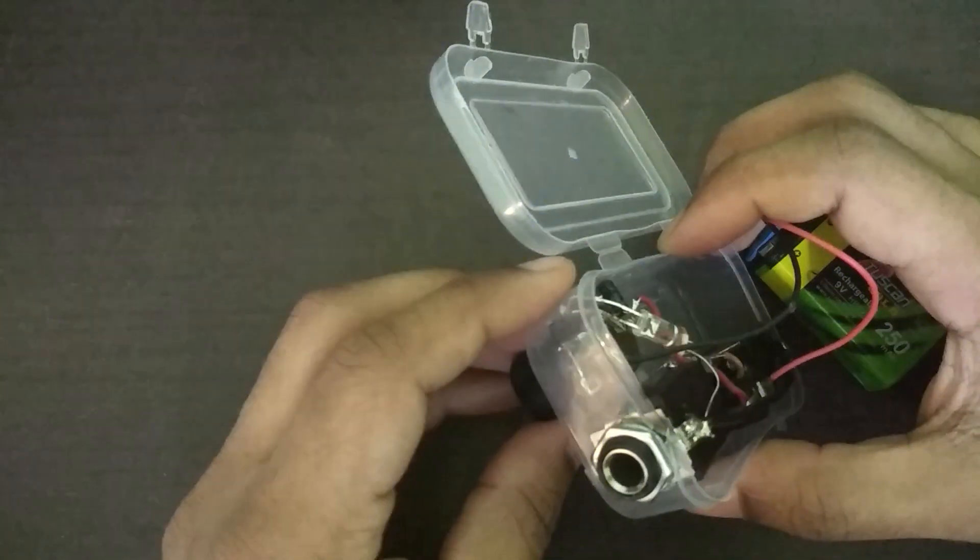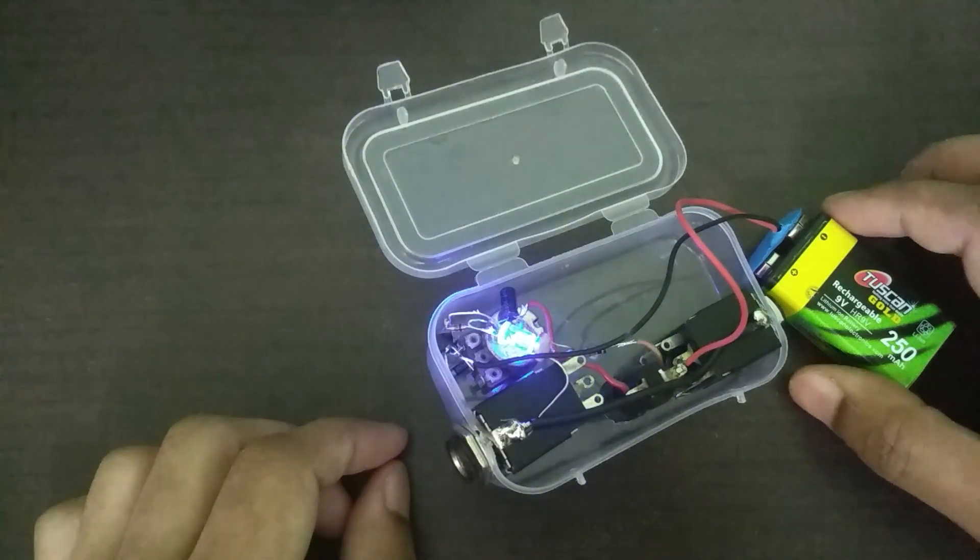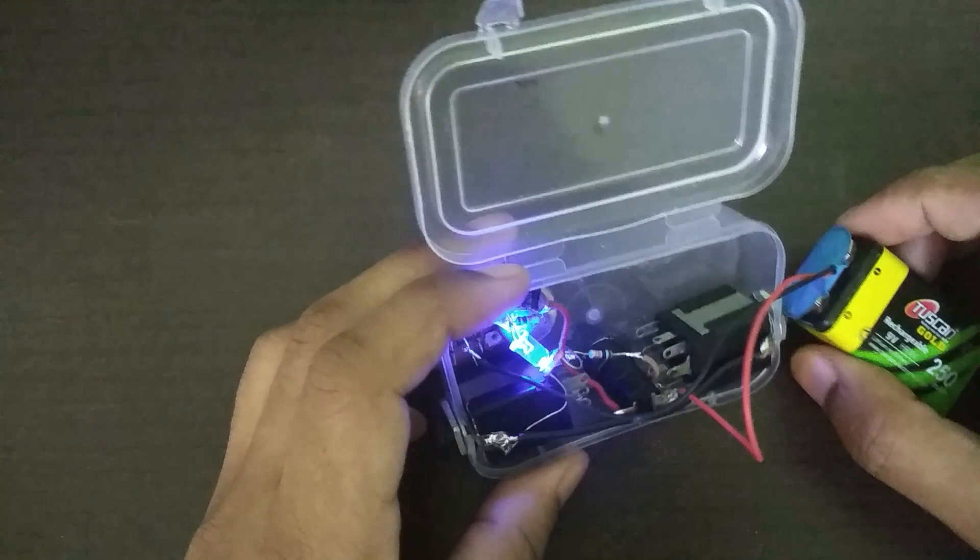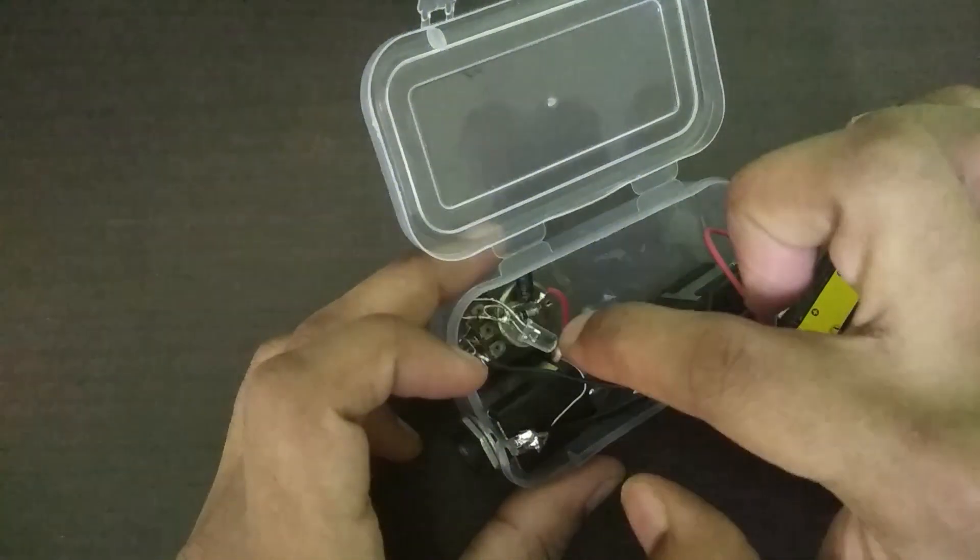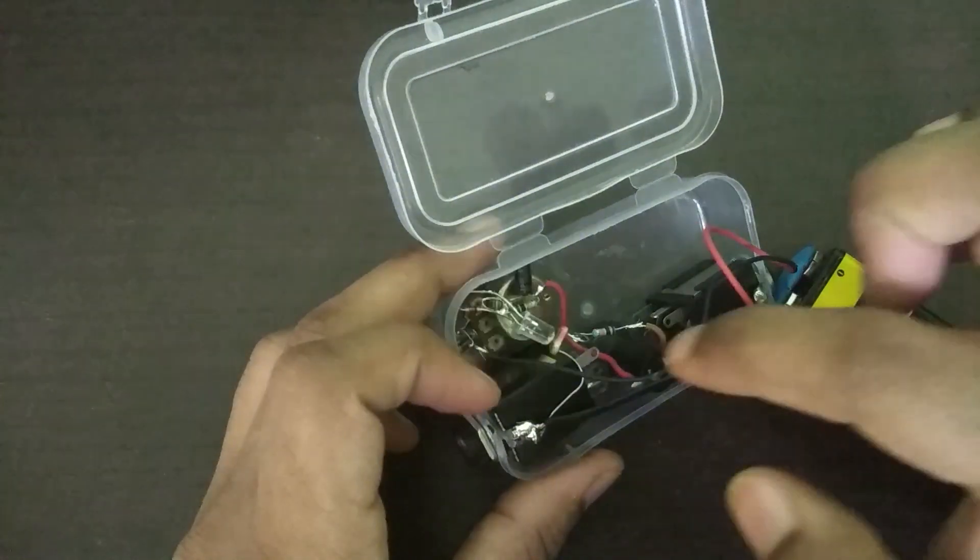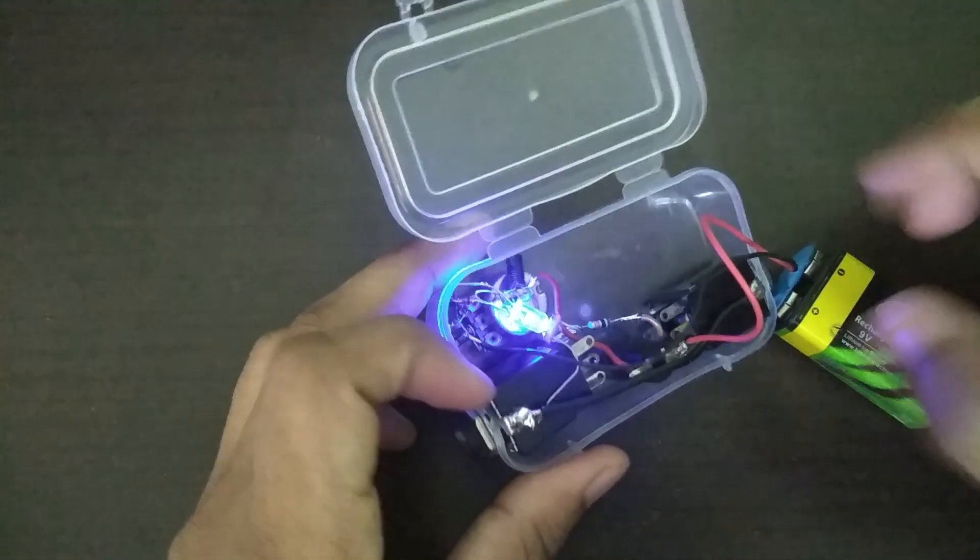But as I turn this knob here, you start getting faster and faster blinking. Yeah, so I think what I'll do is I'll cover this LED and the LDR in black tape so that other light doesn't get into the LDR.